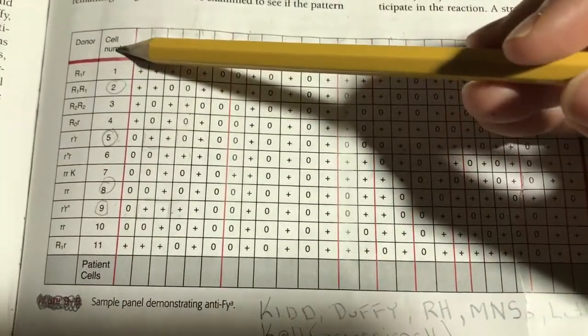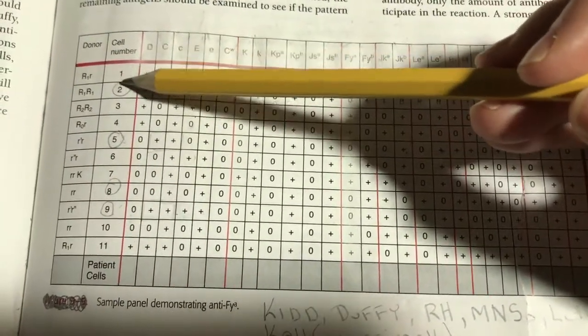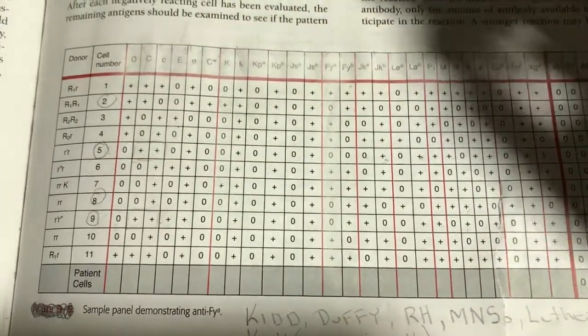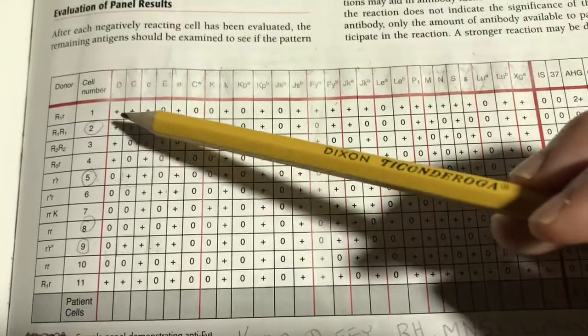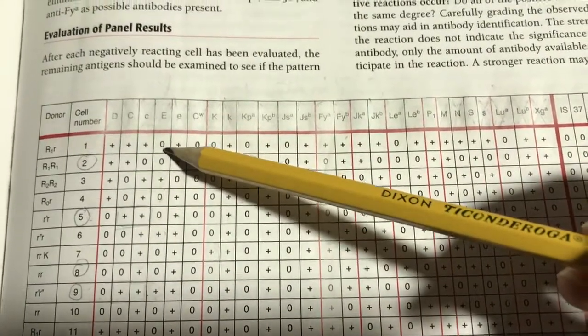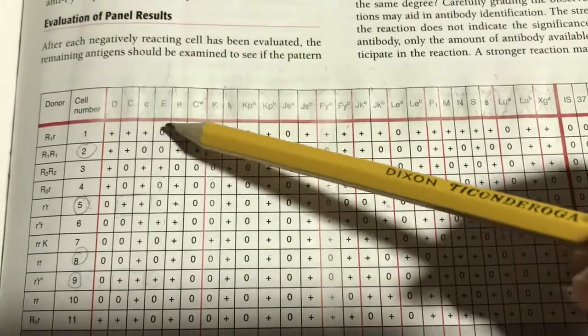But we can't identify with the antibody screen. We have to use an antibody panel. This is letting us know these are our donor cells, donor reagent cells.